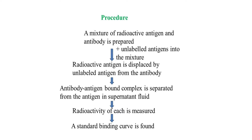When in the first step we add the antibody to the radioactive antigen, they form the radioactive antigen-antibody complex. In the second step, when we add unlabeled antigen, it naturally displaces the radioactive antigen from the antibody. The antigen-antibody bound complex is then separated from the antigen in the supernatant fluid, and the radioactivity of each is measured, and a standard binding curve is formed.